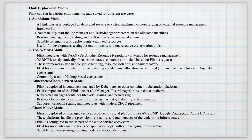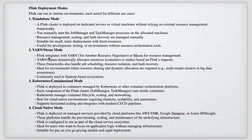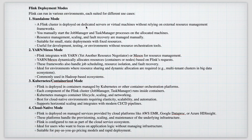Now let's look at deployment modes in Flink. Similar to Spark's deployment modes, Flink also has multiple deployment modes — four in total. The first is standalone mode, used for development and testing purposes on a local system. The Flink cluster is deployed on a dedicated server or VM, and you manually start the Job Manager and Task Manager processes.